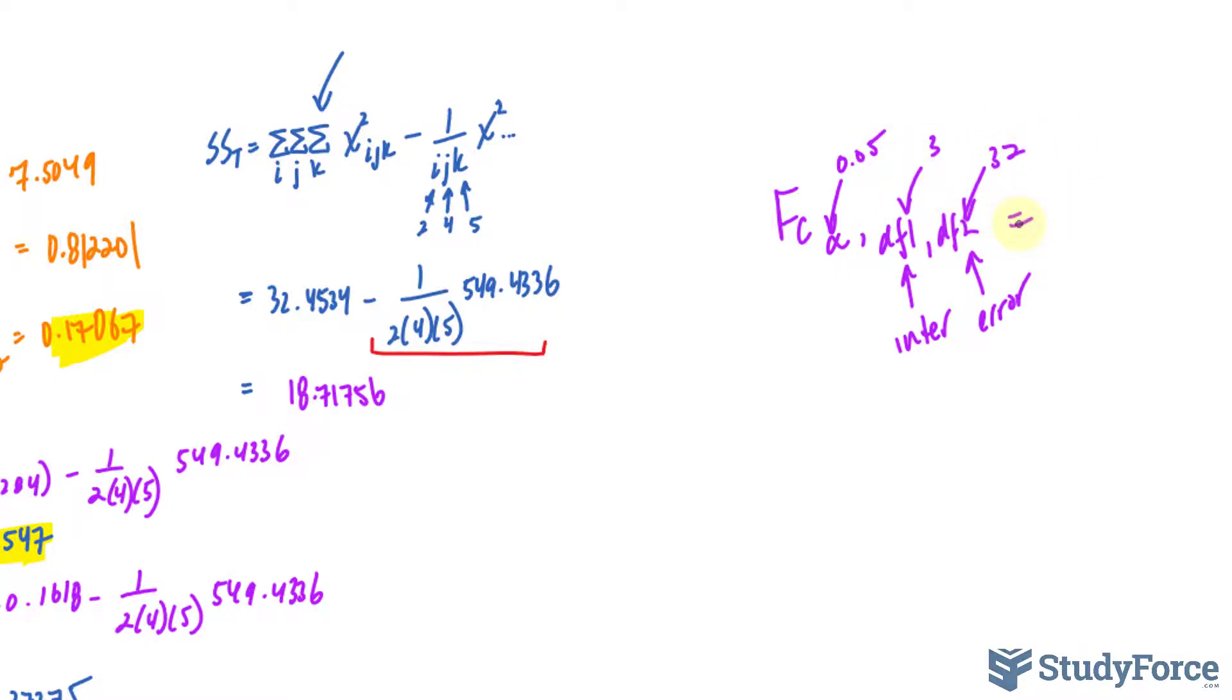Finding this number in a table, you will get 2.9. And since 0.17, F observed, is less than F critical, that means we do not reject the null hypothesis.